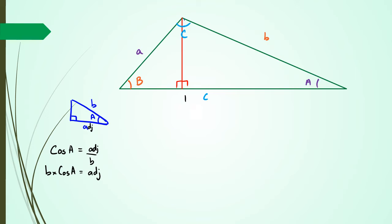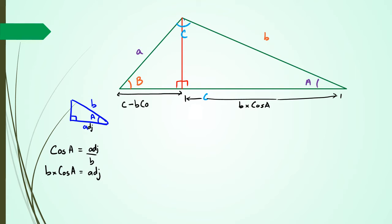So this distance here can be written as B times cos A, which means the remaining distance can be written as C minus B cos A. Now the reason I'm doing this is because I'm going to use Pythagoras to figure out what this red line is, and then use Pythagoras again to figure out what A is.